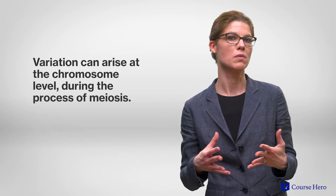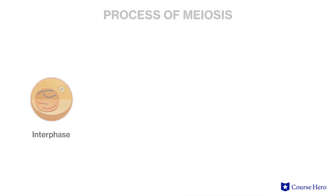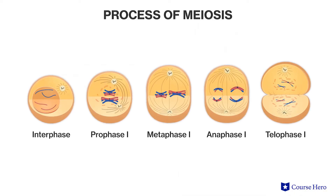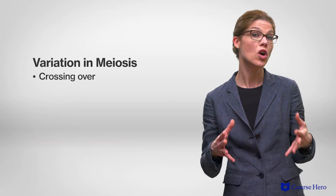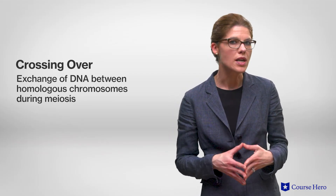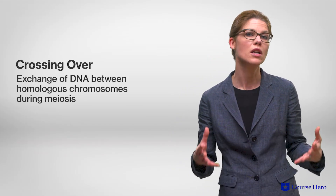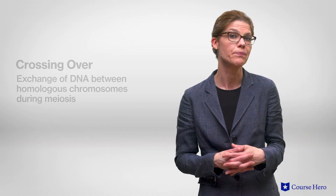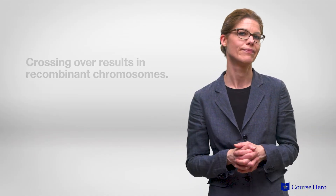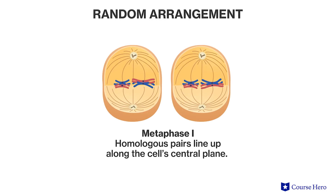Variation can also arise at the chromosome level during the process of meiosis. This is a modified type of cell division found only in sexually reproducing organisms, which results in the production of gametes. There are two ways in which variation is introduced during meiosis: crossing over and independent assortment. Crossing over happens early on in meiosis in prophase I and results in the exchange of DNA between homologous chromosomes — between the paternal and maternal chromosome of each chromosome pair — resulting in recombinant chromosomes. The second way variation is introduced is as a result of the random arrangement of chromosome pairs on the cell plate during metaphase I.